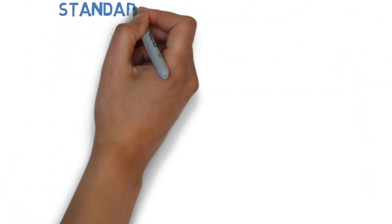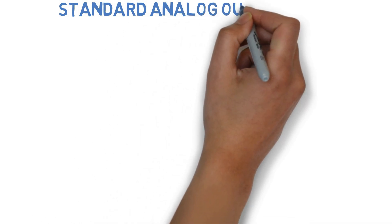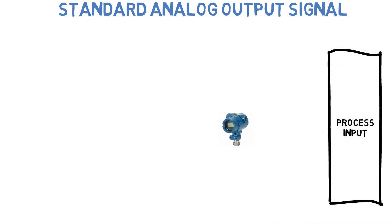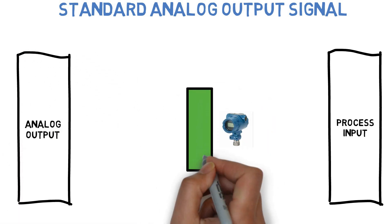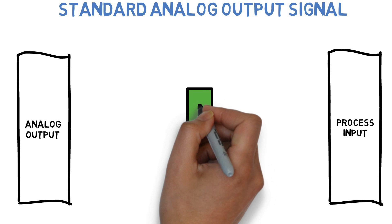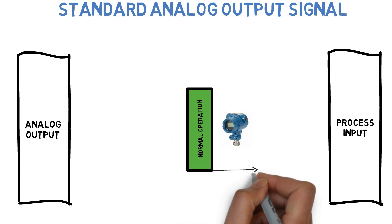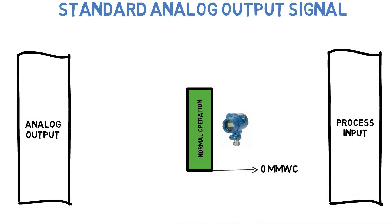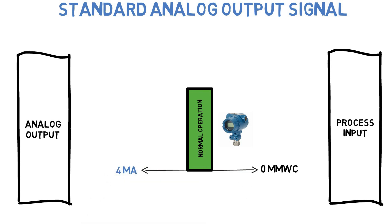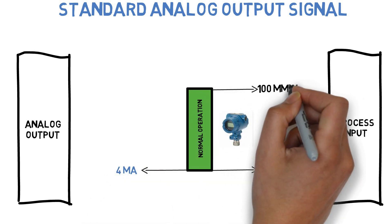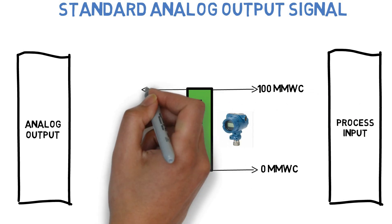Before going into NAMUR, let's see about the Standard Analog Output Signal. During normal operation, the transmitter analog output shall be between 4 to 20 mA.